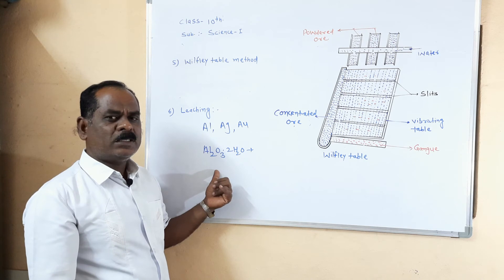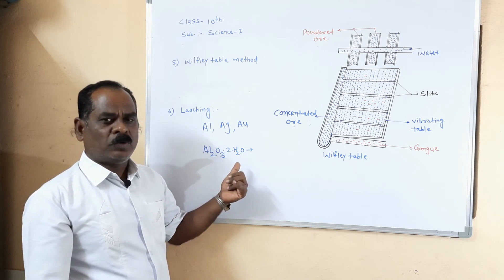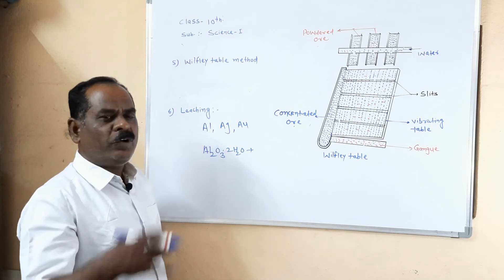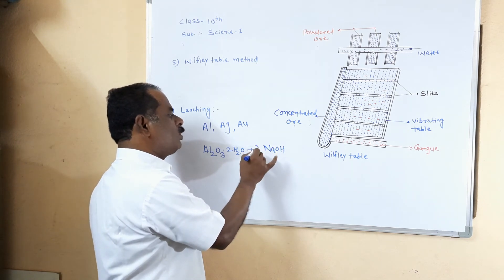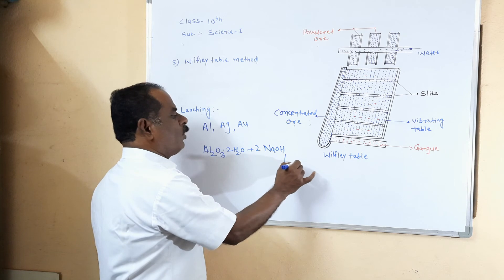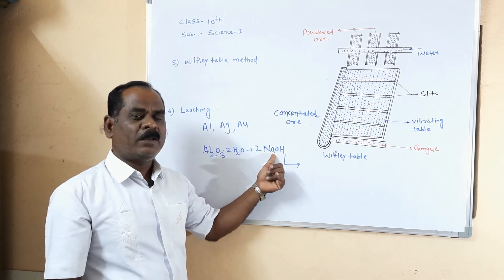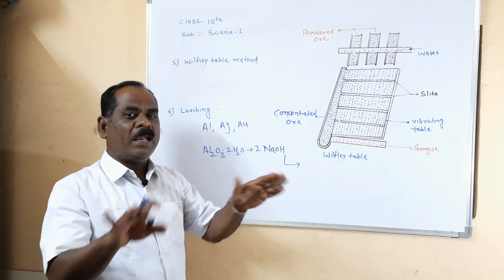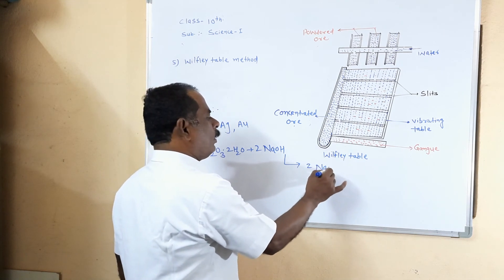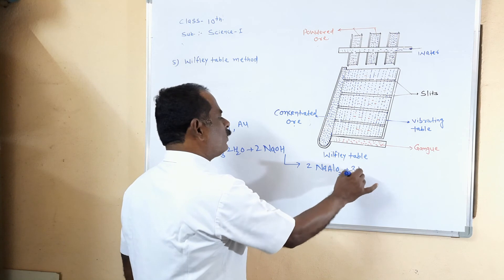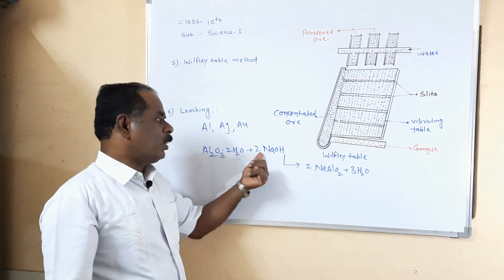When you dissolve this bauxite powder in a suitable solution like NaOH or sodium carbonate — today I will take sodium hydroxide as the suitable solvent — dissolve the ore in NaOH solution for a long time. Then aluminium reacts with sodium hydroxide, but gangue like ferric oxide does not react. Aluminium reacts to form NaAlO2 (sodium aluminate) and water, but ferric oxide and titanium oxide do not react with sodium hydroxide.